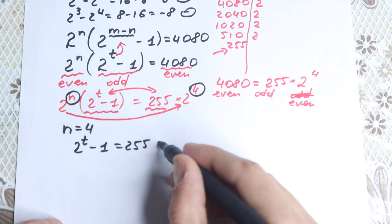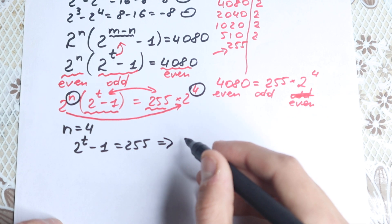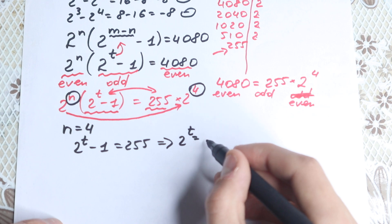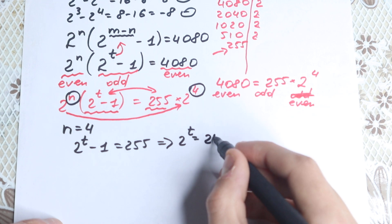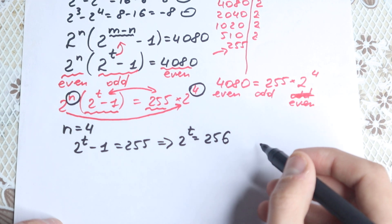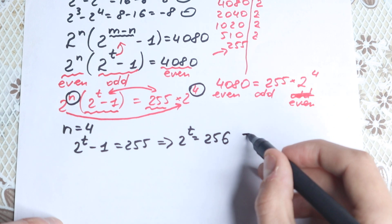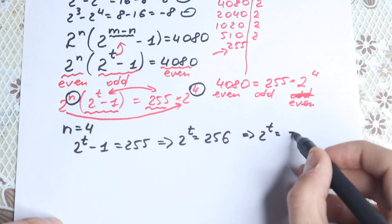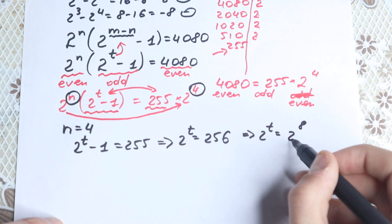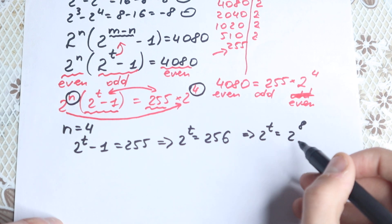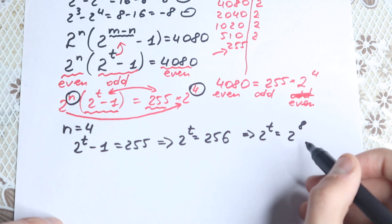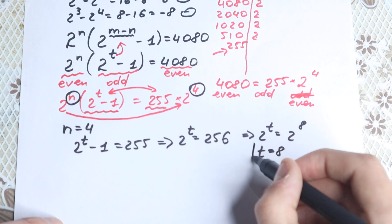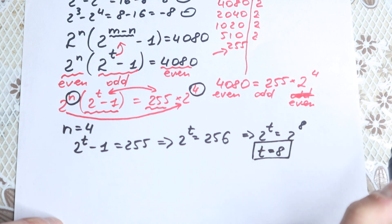From matching the even parts, we see 2 to the n equals 2 to the fourth, so n equals 4. From matching the odd parts, we have 2 to the power t minus 1 equal to 255. Let's find t. We get 2 to the power t equals 255 plus 1, which is 256. And 256 is 2 to the eighth power — since 2 to the 4th is 16, times 2 is 32, times 2 is 64, times 2 is 128, times 2 is 256 — so t equals 8.